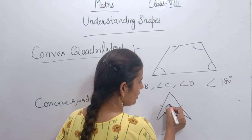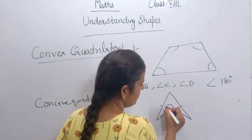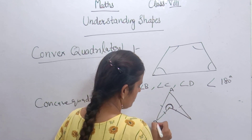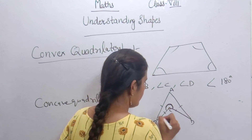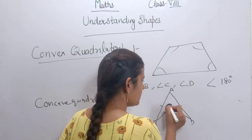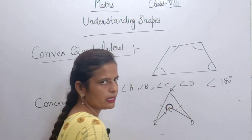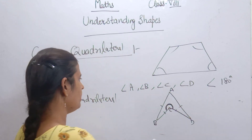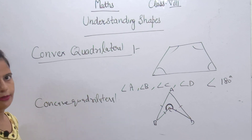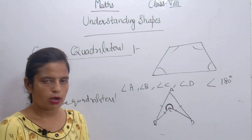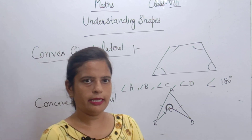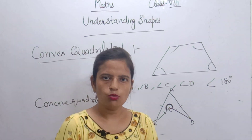But if this angle — let's call it at point C — is greater than 180 degrees, then this is a Concave Quadrilateral. So you have to read all your properties and write them in your notebook. Thank you. Have a nice day.